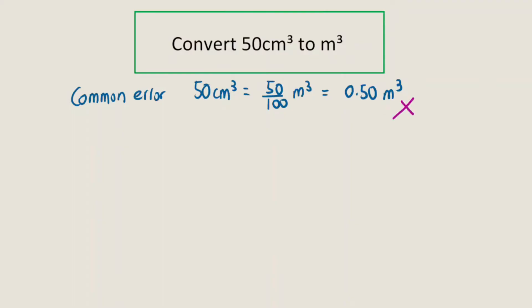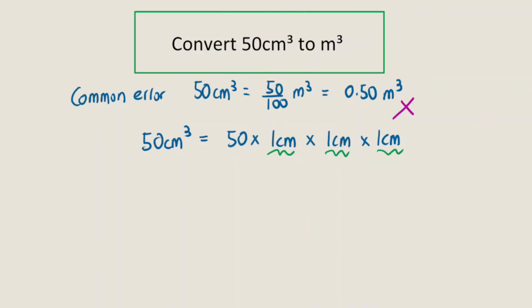So this is not correct. Instead, let's do this. Think of 50 cm³ as 50 times 1 cm times 1 cm times 1 cm. And then we'll individually convert each of the 1 cm to m.